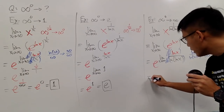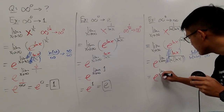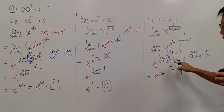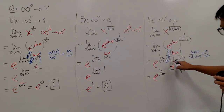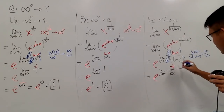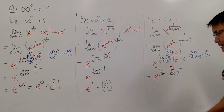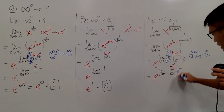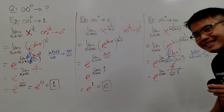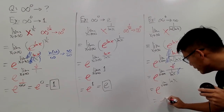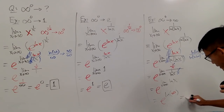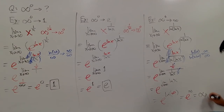Differentiating: the derivative of ln x on top is 1 over x. The derivative of ln(ln x) on the bottom is 1 over ln x times 1 over x by the chain rule. The 1 over x terms cancel, leaving ln x in the denominator — so we bring it up. Plugging in infinity gives e raised to ln(infinity), which is e to the infinity's power. This gives infinity.